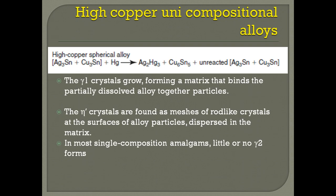In high copper unicompositional alloys, there is no or very little amount of gamma-2 phase. The silver-tin phase and copper-tin phase react with mercury to form the gamma-1 phase and eta phase. This eta phase is more stable at room temperature, and it tends to bind the unreacted gamma phases and gets embedded in the matrix formed by the gamma-1 phase. The eta phase interlocks with the particles of the gamma-1 phase, thereby preventing delayed expansion in the future.